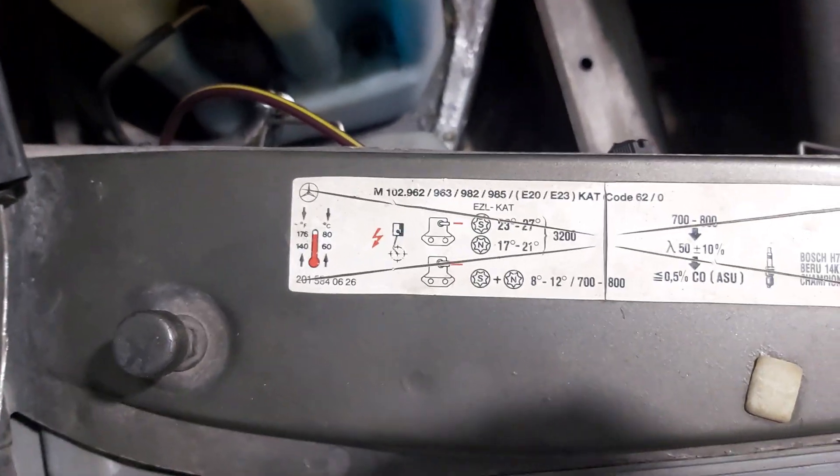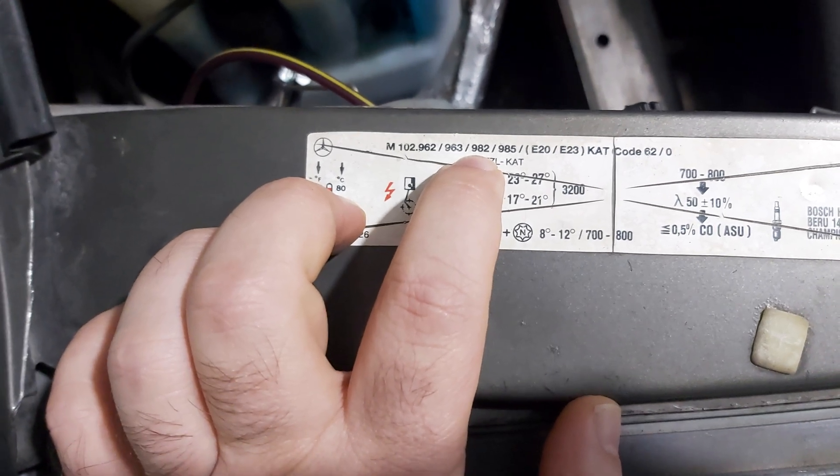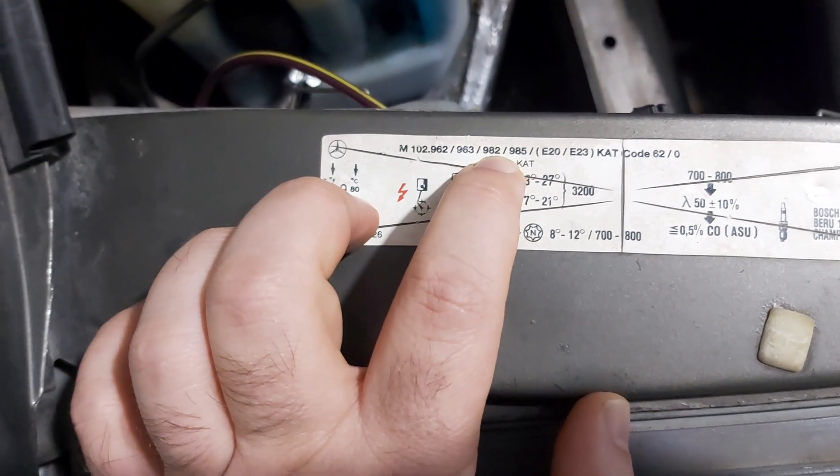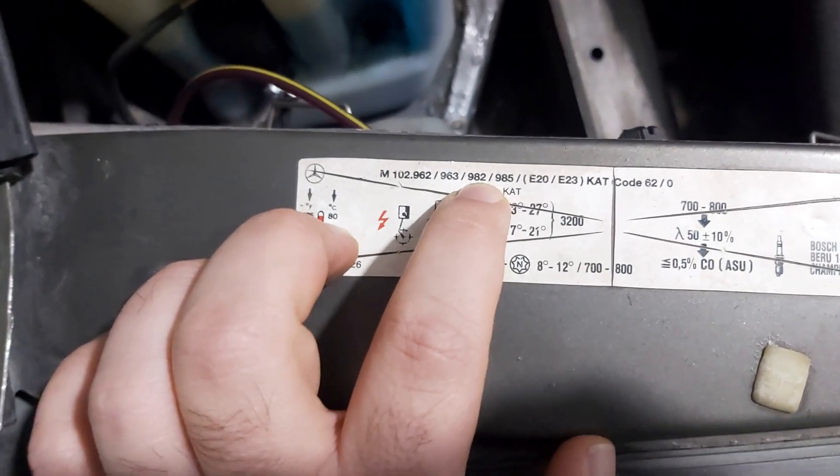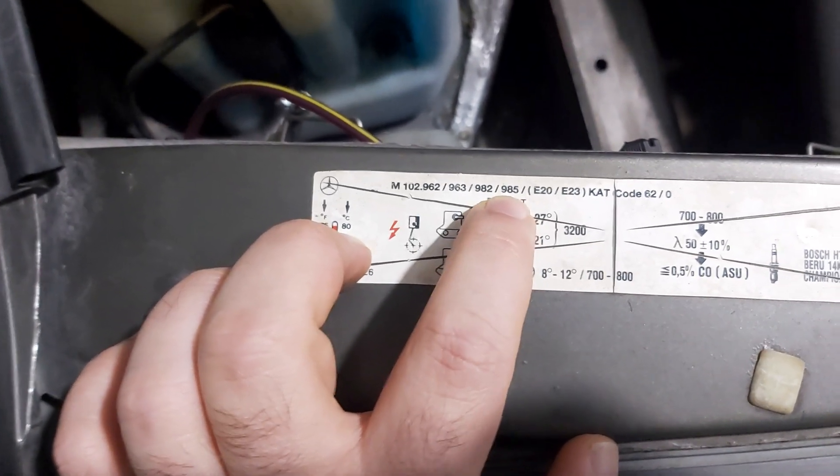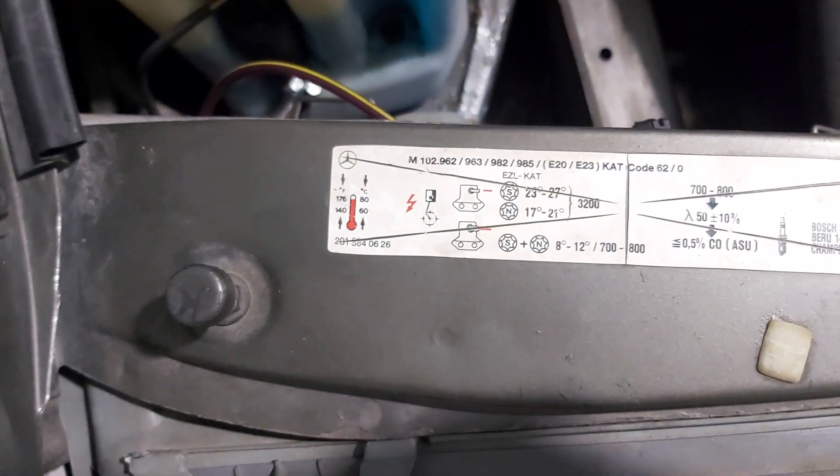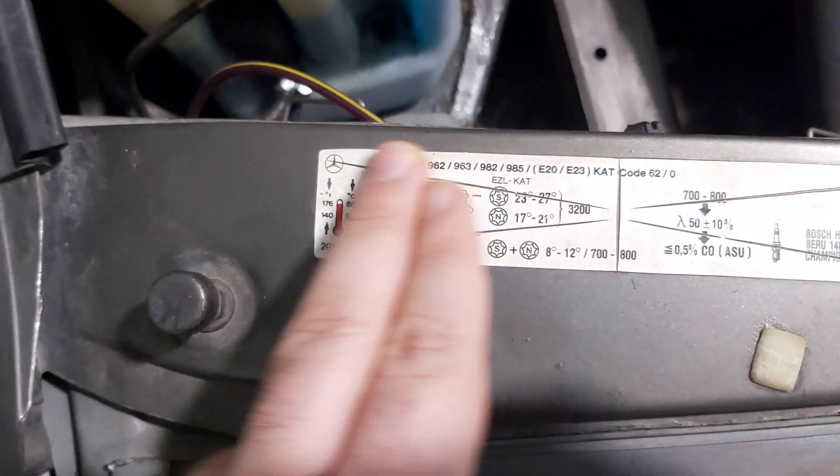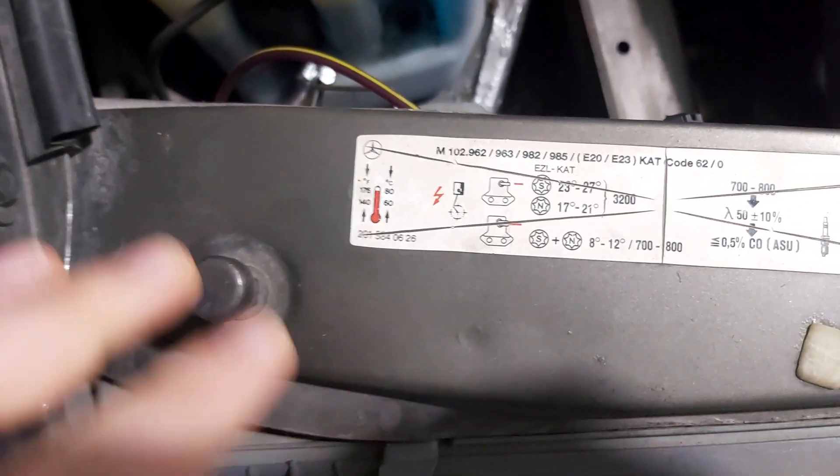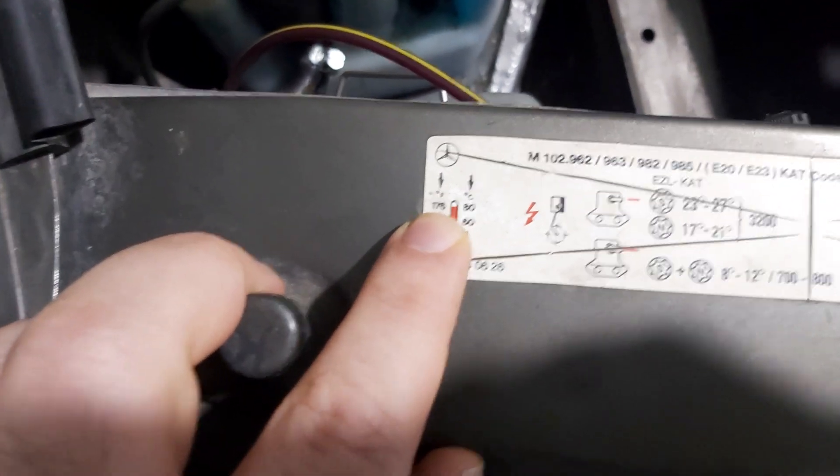M102982 is 2.3 liter engine for W124. 985 is for 190E. Here, this is your operating temperature - 80 degrees or 176 Fahrenheit.